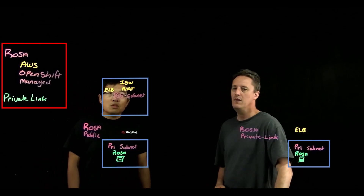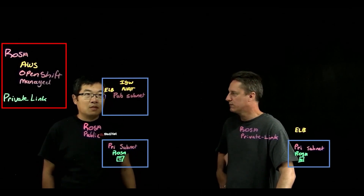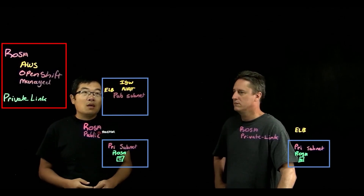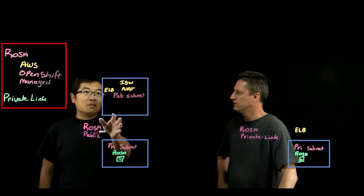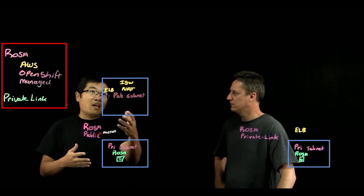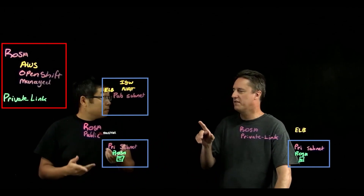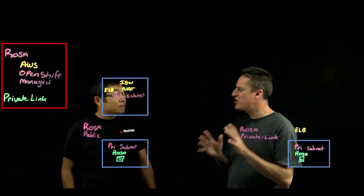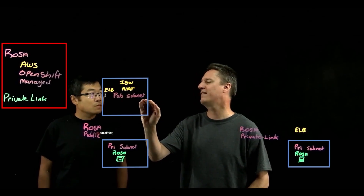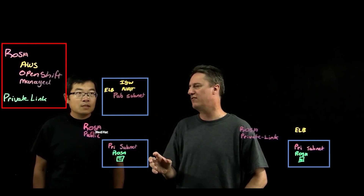Sure. If you look at here, we basically draw a ROSA cluster with a private subnet. Inside this VPC, you have a private subnet and a public subnet. On the public subnet, you have an elastic load balancer, and this subnet is attached with an internet gateway and a NAT gateway. This is a very traditional AWS VPC — you've got an internet gateway in that public subnet, and the NAT is to cater for communication from the public to the private and vice versa.